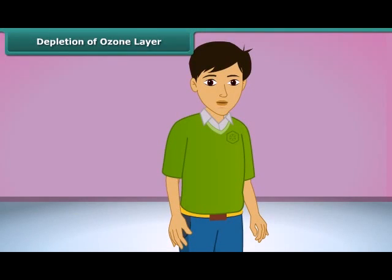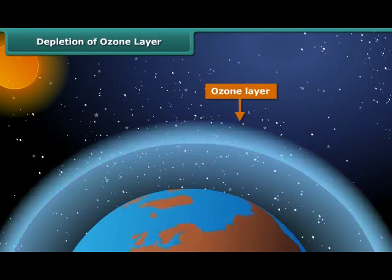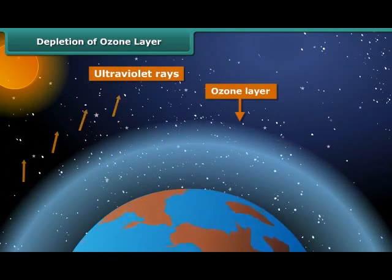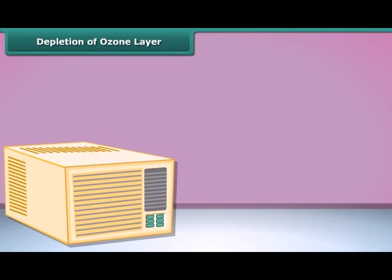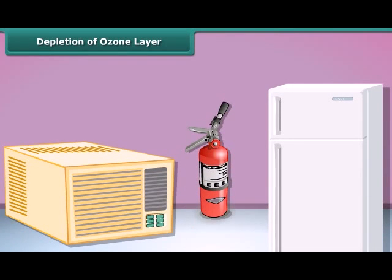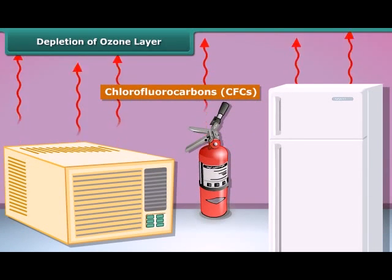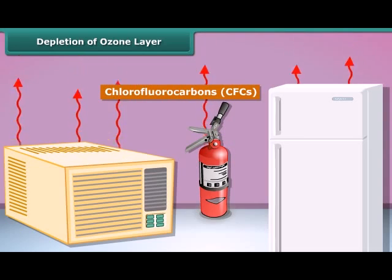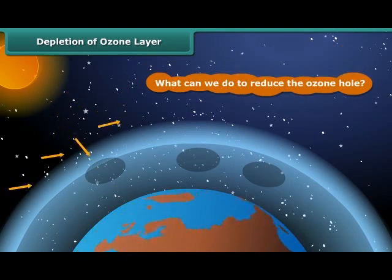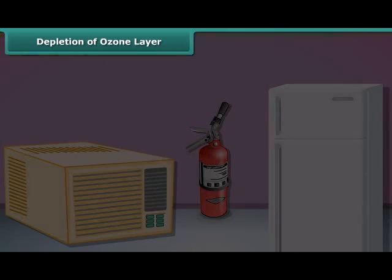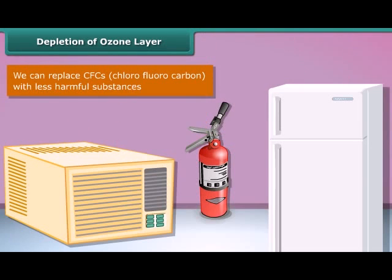Let us learn about the ozone layer. It is a layer of ozone gas in the upper atmosphere of Earth. Its role is to protect us from the harmful ultraviolet rays of the sun. Things like air conditioners, refrigerators, and fire extinguishers release chlorofluorocarbons — CFCs — into the atmosphere and create holes in the ozone layer. We can replace CFCs with less harmful substances to save the ozone layer from depletion.